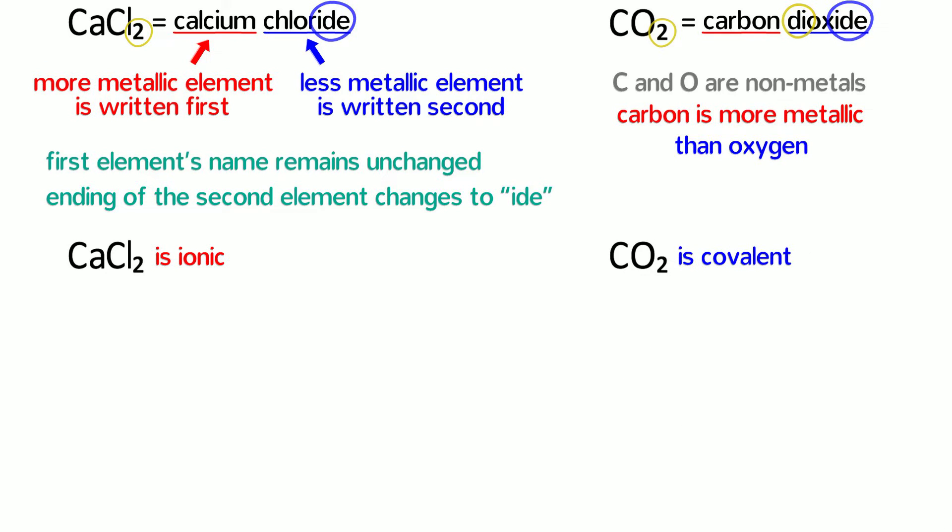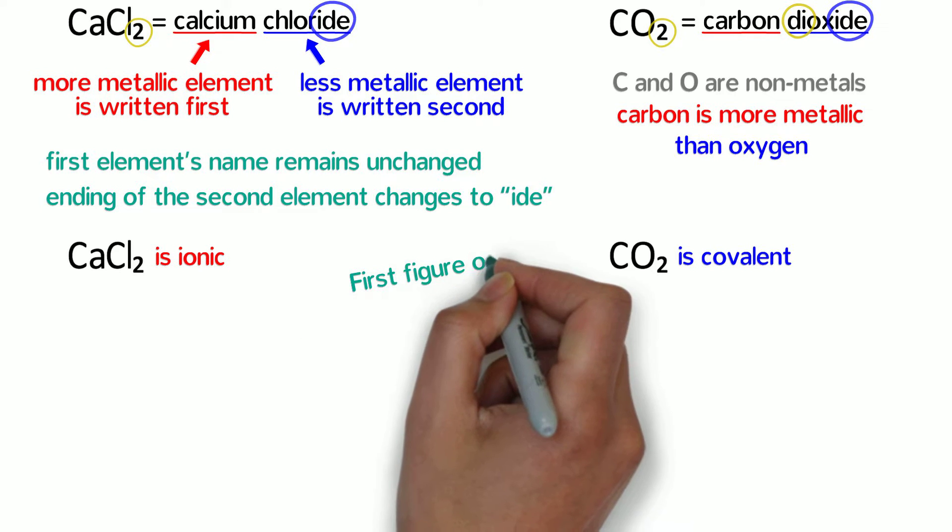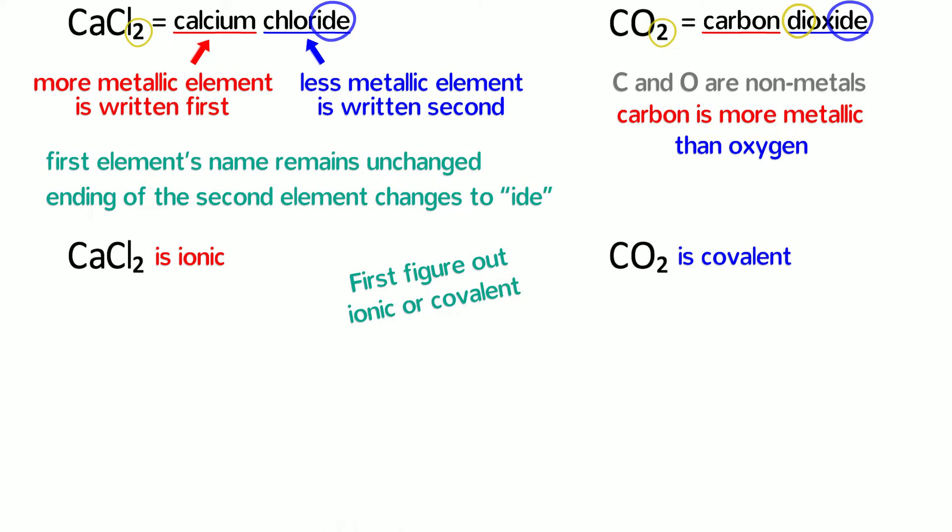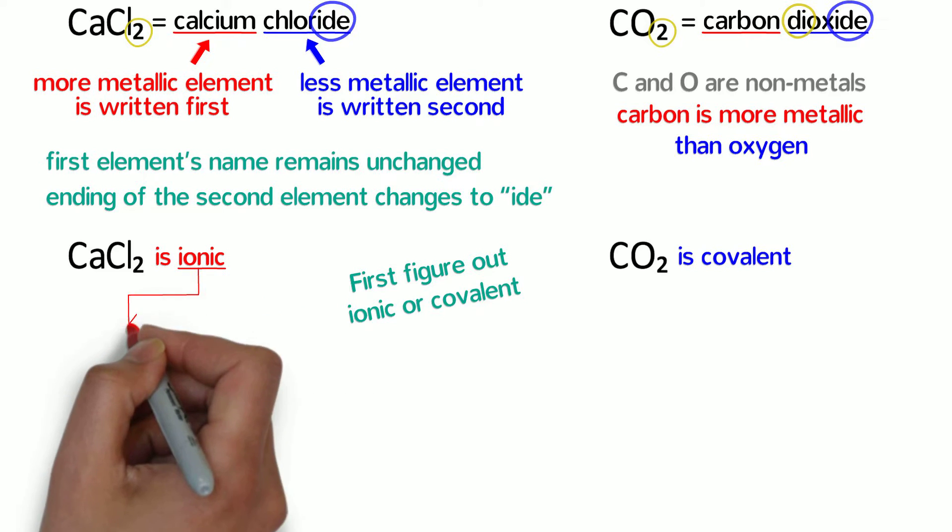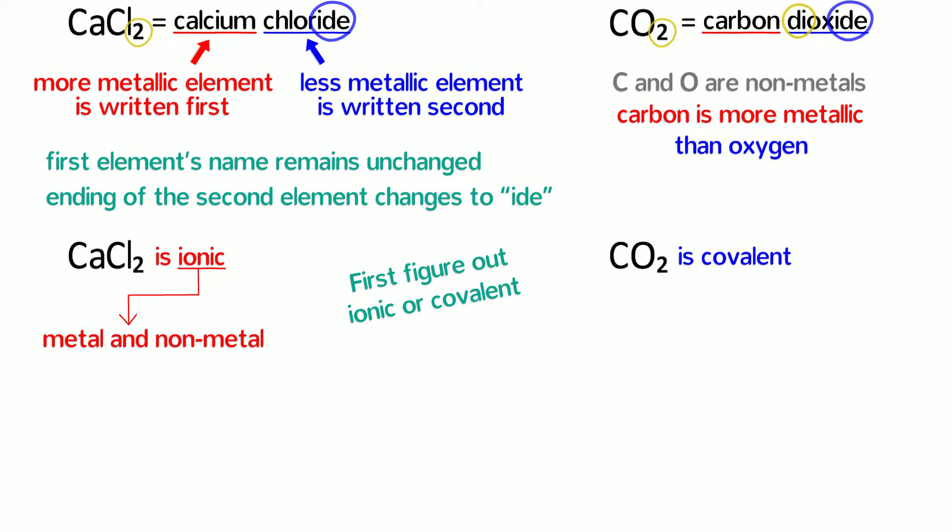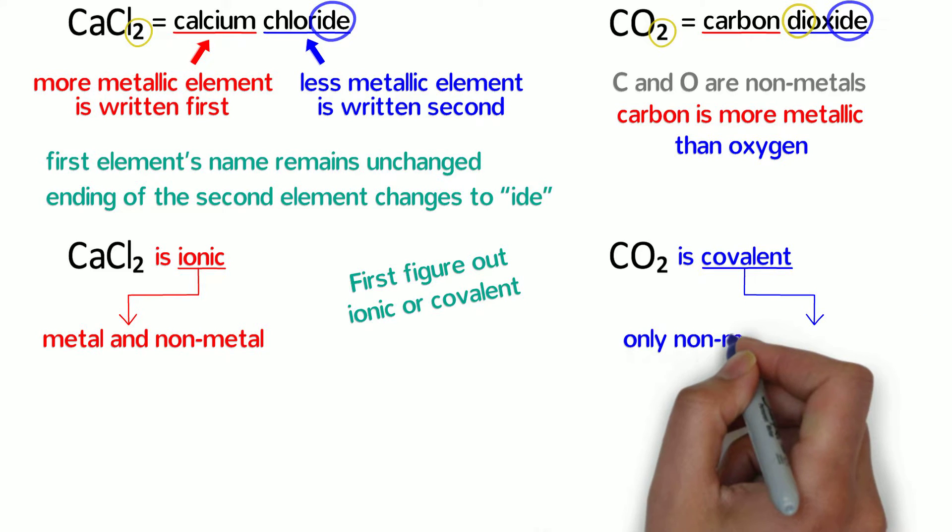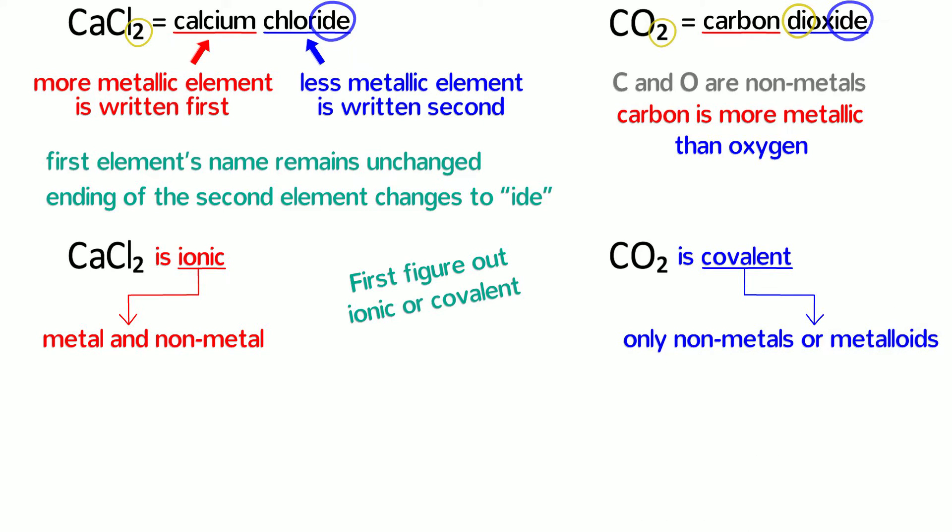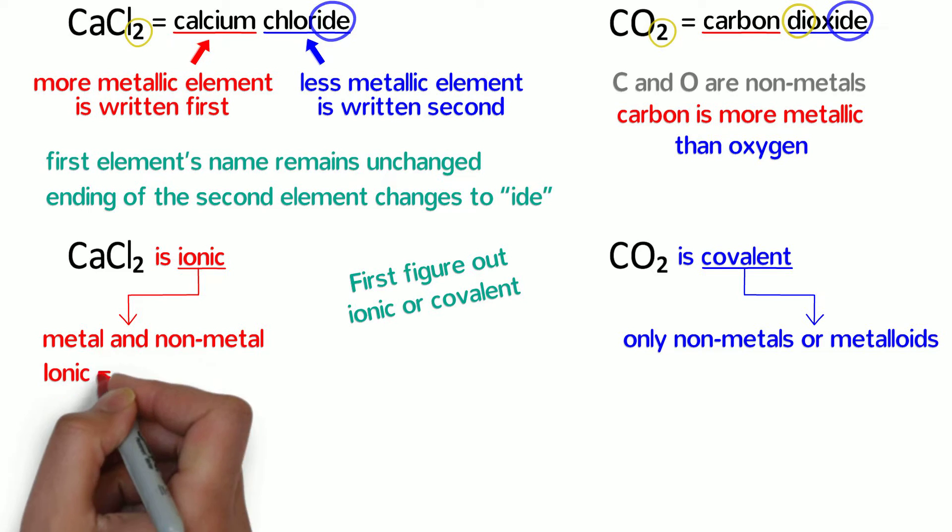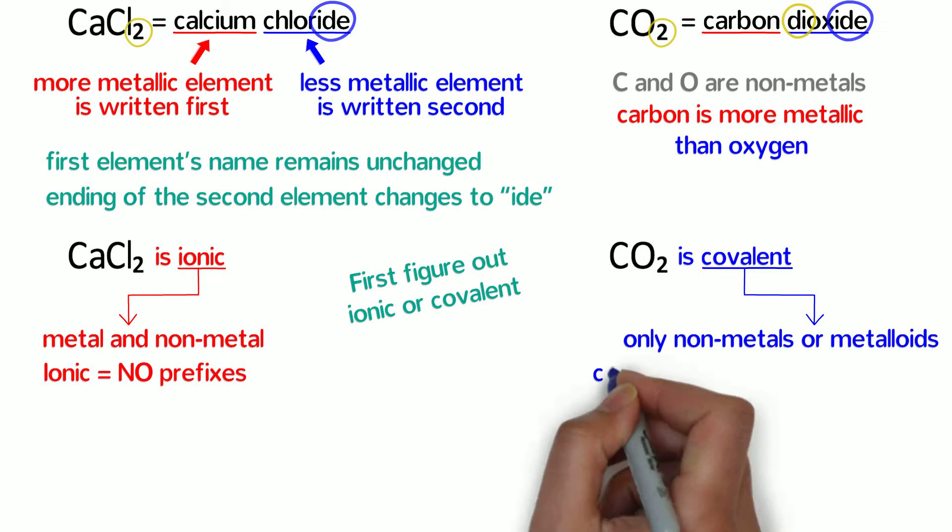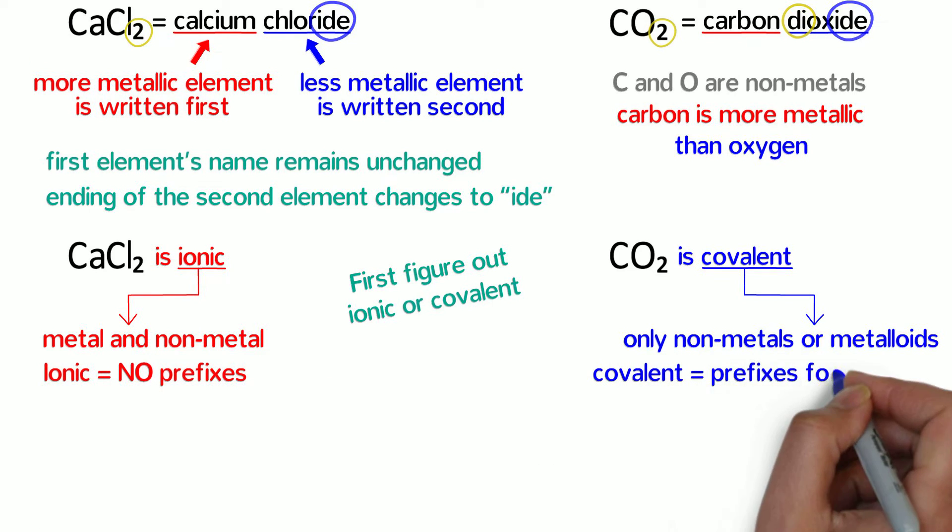Ionic and covalent compounds are named differently, so the first thing you need to do when naming compounds is figure out whether the compound is ionic or covalent. Ionic compounds are typically made of a metal and a nonmetal, just like calcium chloride, while covalent compounds are composed of only nonmetals or metalloids, just like carbon dioxide. Ionic compounds do not use prefixes, but covalent compounds use prefixes to indicate the numbers in the formula.